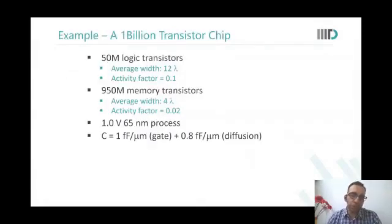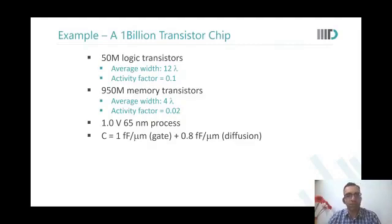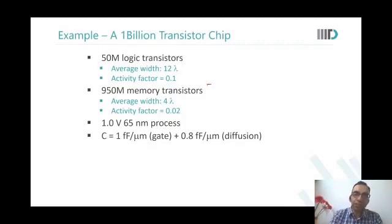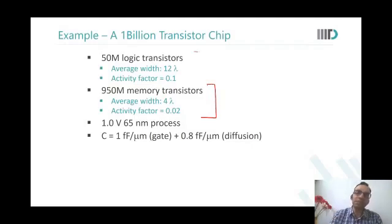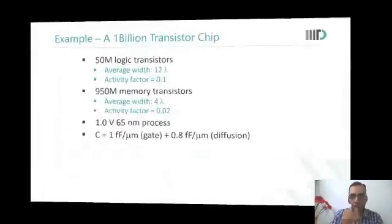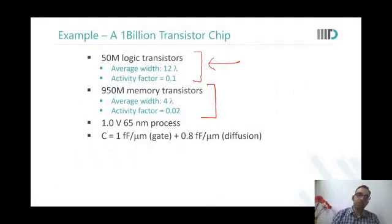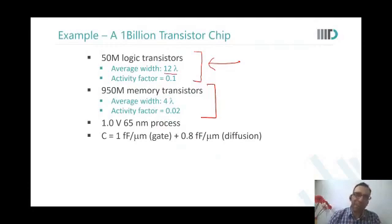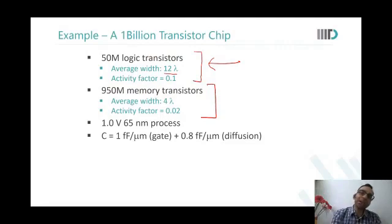For both dynamic and static power analysis, assume a chip with 1 billion transistors. Of those, 950 million are memory cell transistors and 50 million are logic transistors — this course primarily covers the logic part. Assume 50 million logic transistors with an average width of 12 lambda, where lambda is the minimum feature size in a given technology. Activity factor is assumed to be 0.1.